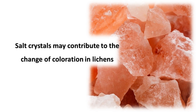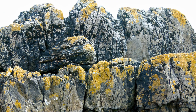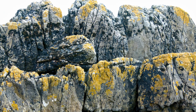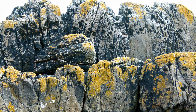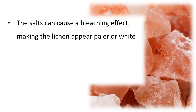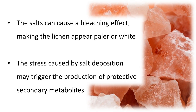It's also worth mentioning that deposition of salt crystals may contribute to changes in coloration in lichens. For instance, lichens in coastal or arid environments can accumulate salts from the atmosphere or soil into their thallus. The salts can cause a bleaching effect, making the lichen appear pale or white, basically due to damage or breakdown of chlorophyll and other pigments. Additionally, the stress caused by salt deposition may trigger the production of protective secondary metabolites that can alter the lichen's color.